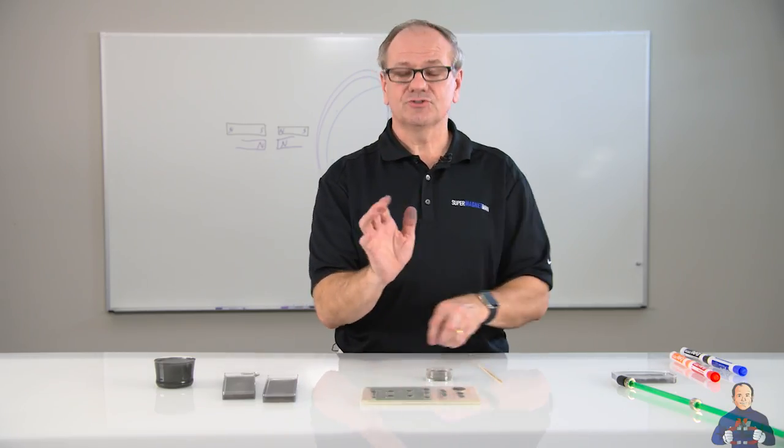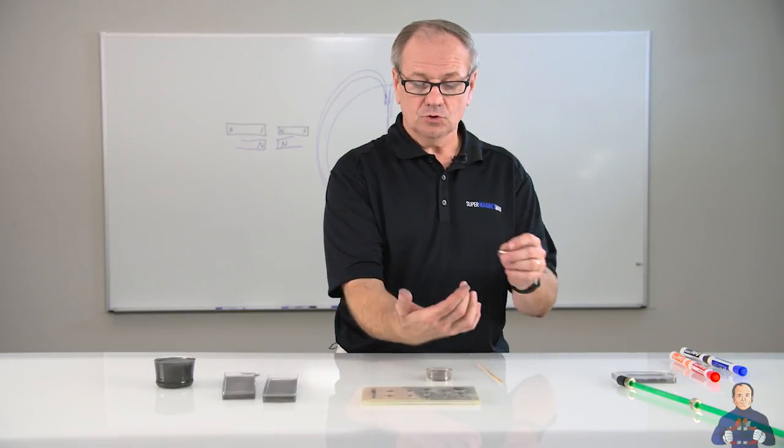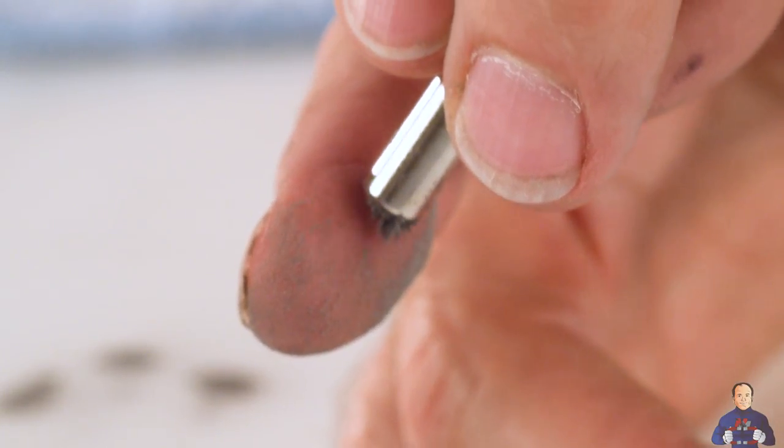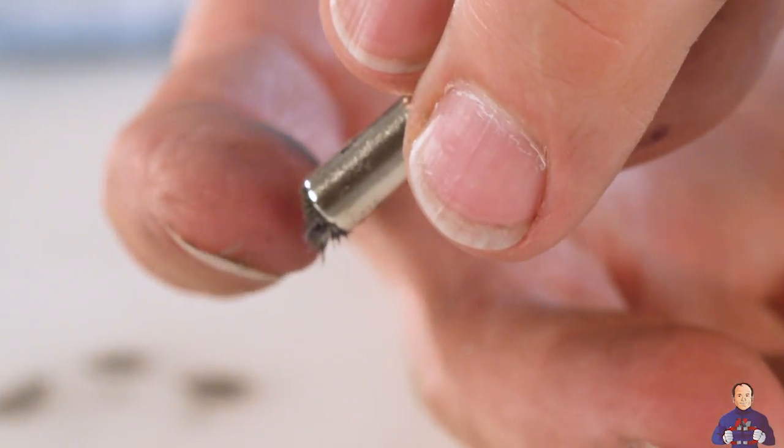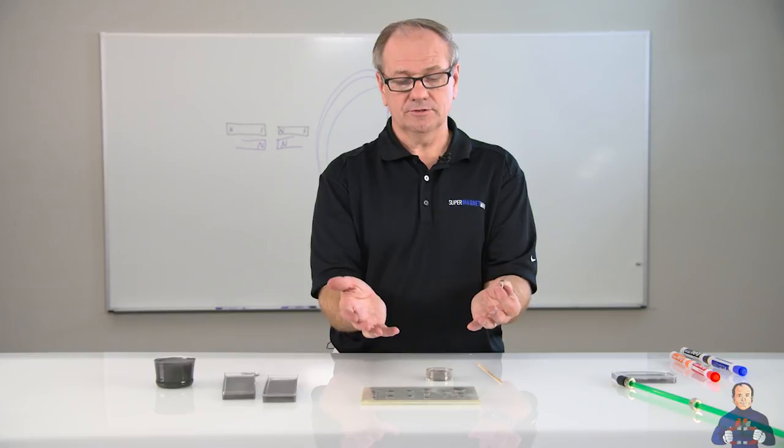Every time someone works with this they get iron powder in their fingertips. So what we do is use this magnet as our magnet vacuum cleaner and it just vacuums the iron right out of your fingerprints. You're able to just pull it right out without having to run and wash your hands.